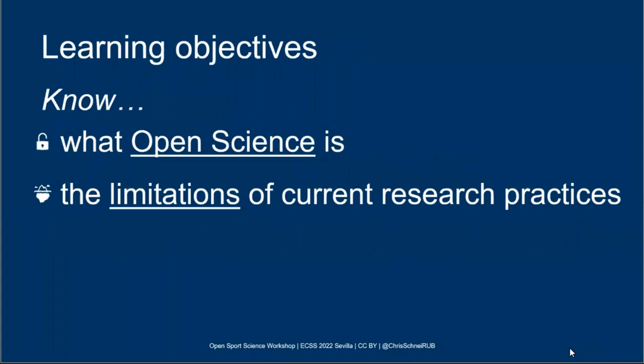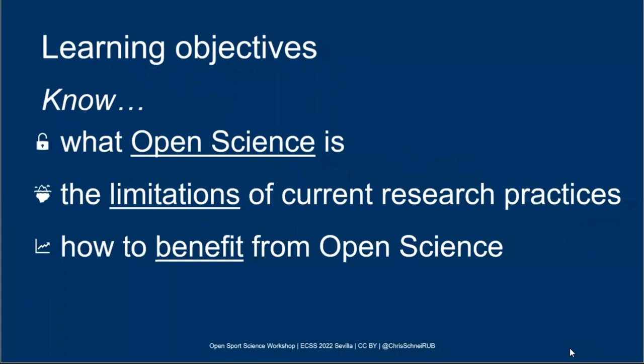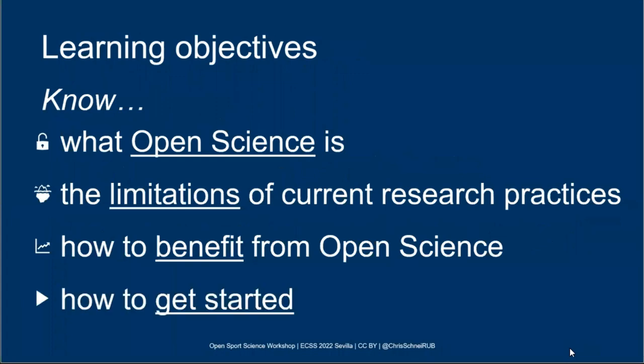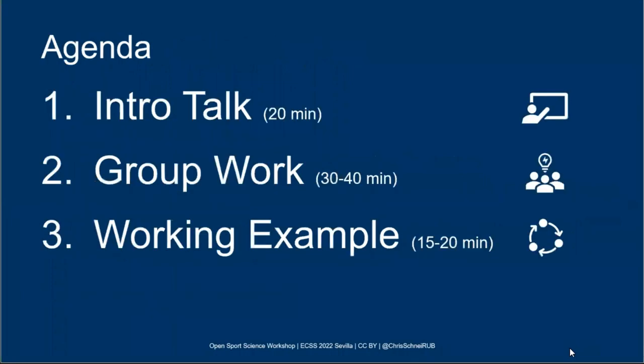The learning objectives are: understanding what open science is, knowing the limitations of current research and publication practices, understanding individual benefits of applying open science, and knowing which tools to use to get started. The session includes an introductory talk, group work, and a working example of applying open science throughout the entire research process.